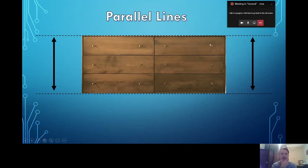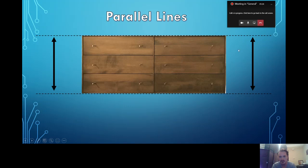This means that this shape is a quadrilateral because it has four sides. It's also a rectangle because the vertices are all the same, and we have two lines that are the same length and another two lines that are the same length. Now, is this a square? No, because a square has to have four equal sides.